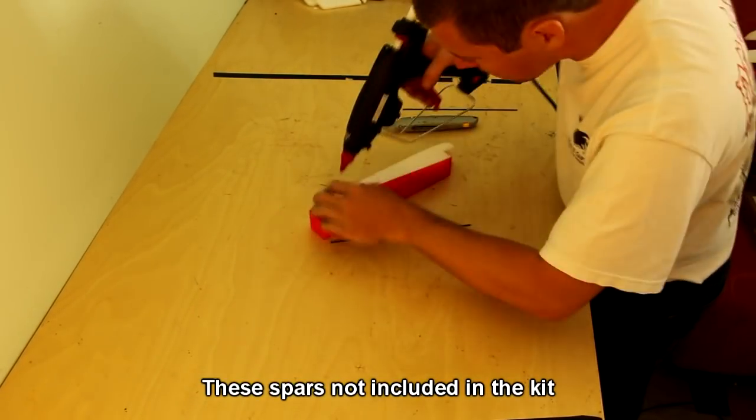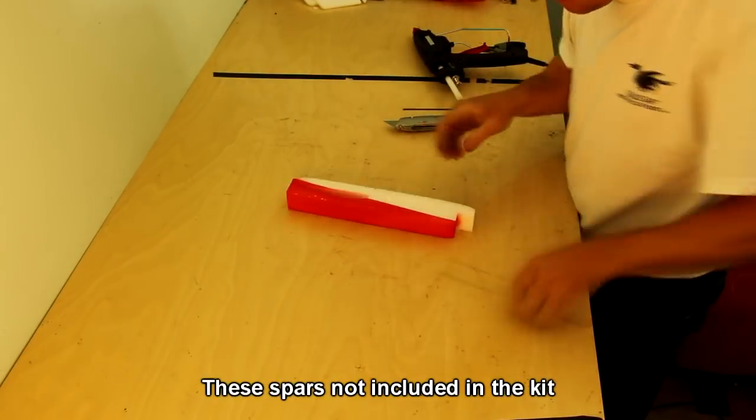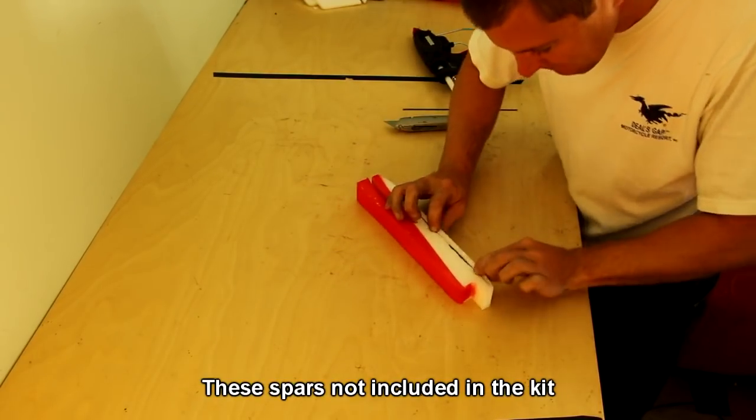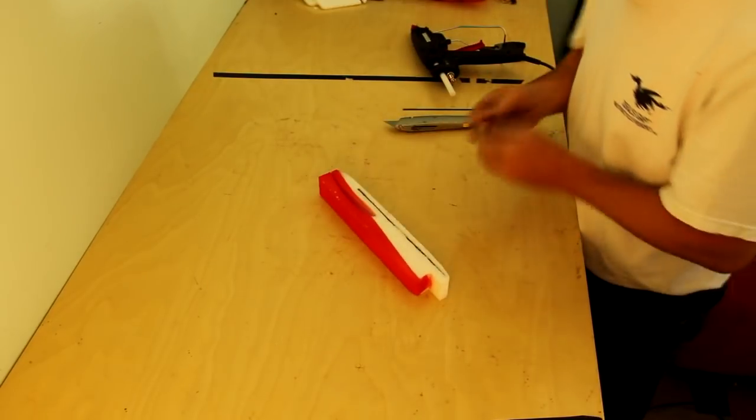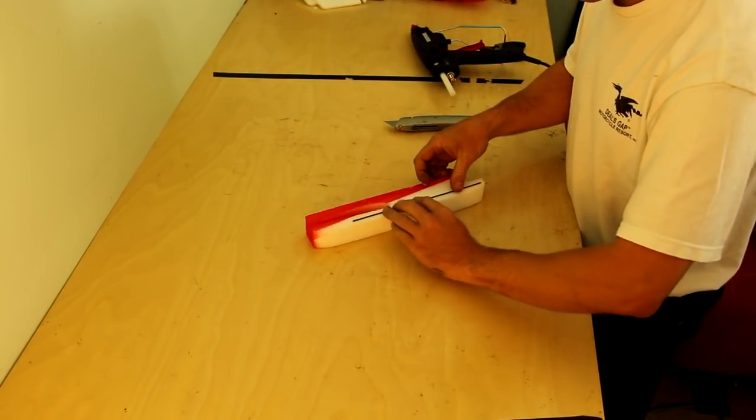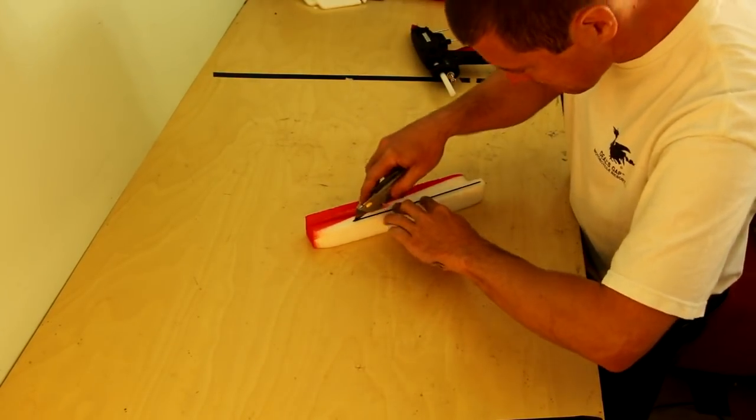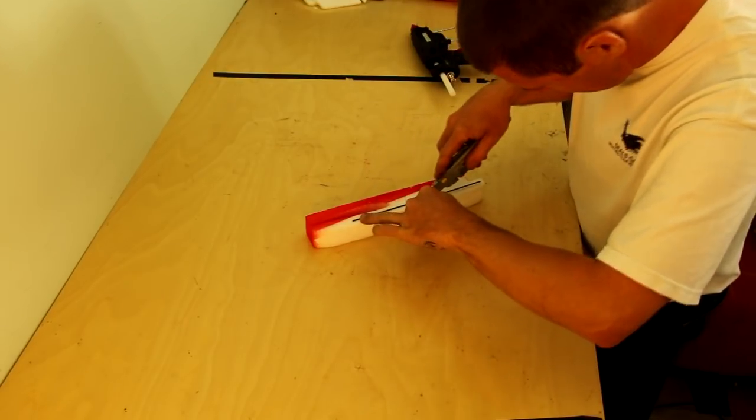I'm adding a spar to the fuselage to help it take hard impacts and considering I wrecked the plane at full throttle and it came out undamaged well I'd say this works. You want it to extend past where the wings meet the fuselage as this will be the break point.